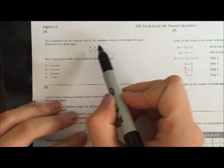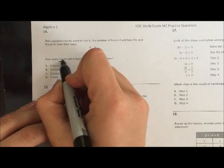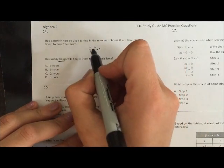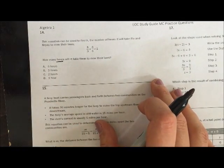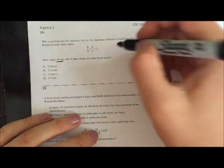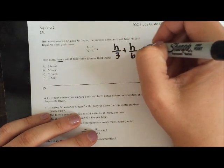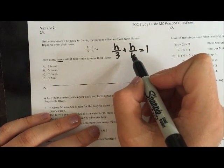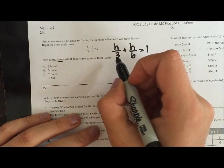Alright, this equation can be used to find h, the number of hours it'll take Flo and Brian to mow their lawn. How many hours will it take them to mow their lawn? So this equation's asking me to solve for h. And a lot of y'all are worried because they're in fraction form. But think back to middle school days when we had to get like denominators. What is the least common denominator, or least common factor of 3 and 6?